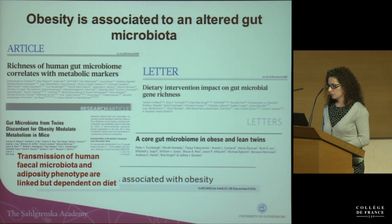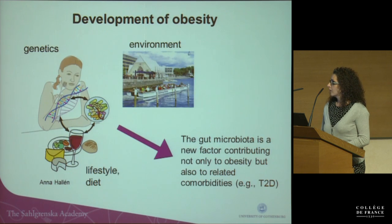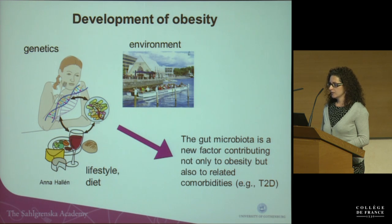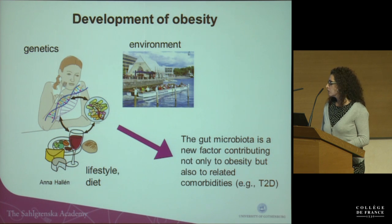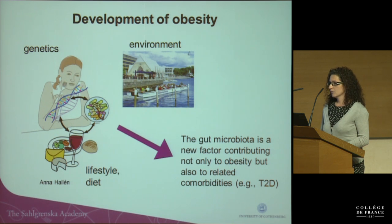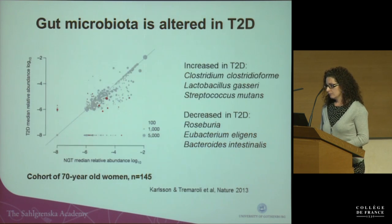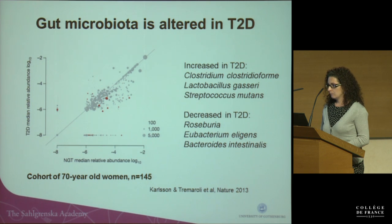The diet plays a major role here. What research has shown is that the same factors that affect the development of obesity — such as genetics, lifestyle, diet, and environment — also shape the gut microbiota and are important not only for the development of obesity, but also obesity-related comorbidities like type 2 diabetes.